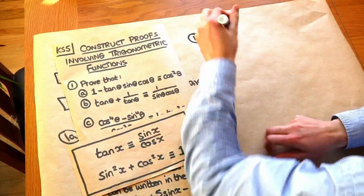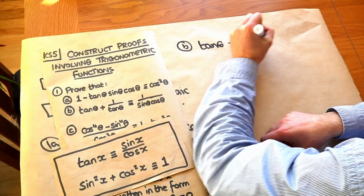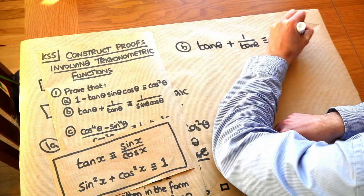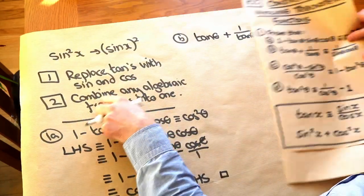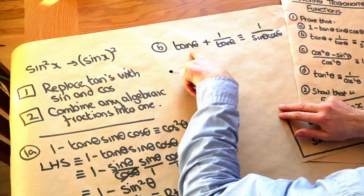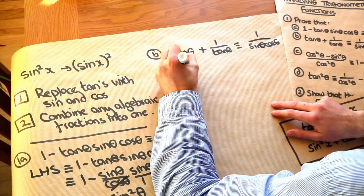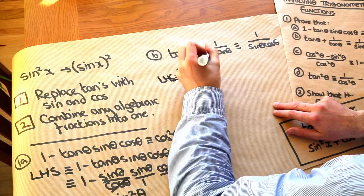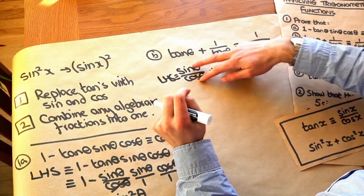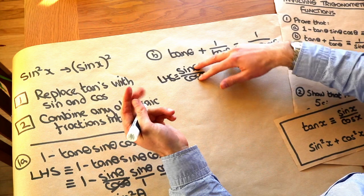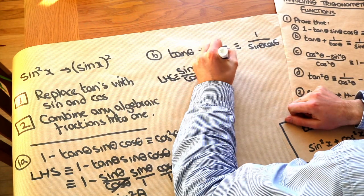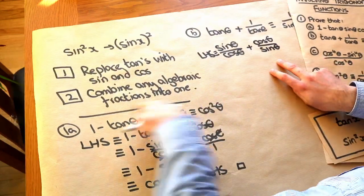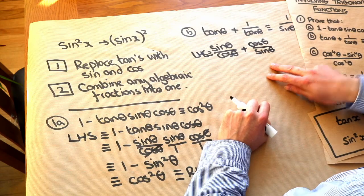Next: we've got tan of theta plus 1 over tan of theta is identical to 1 over sine theta cos theta. As per tip 1, we're going to replace any tans with sine and cos. So tan of theta is sine theta over cos of theta — this is the left-hand side. And 1 over tan of theta is 1 over sine over cos; when we do 1 over a fraction it flips upside down, so this becomes cos of theta over sine of theta.